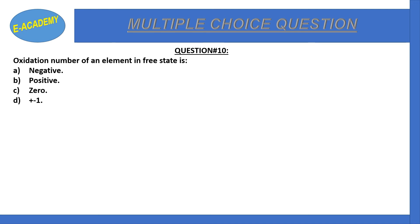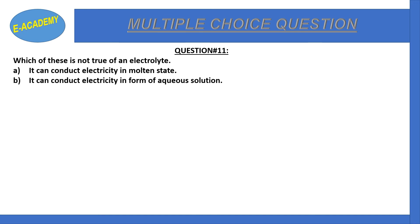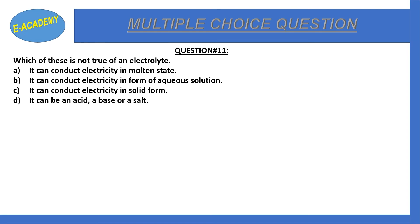If an element is in its free state, its oxidation number is 0. So the correct option is C. Question number 11: Which of these is NOT true of an electrolyte? It can conduct electricity in molten state, in aqueous solution, in solid form, or it can be an acid, base, or salt? Statement C is not correct — the correct answer is option C: an electrolyte cannot conduct electricity in solid form.